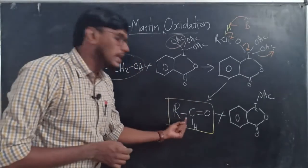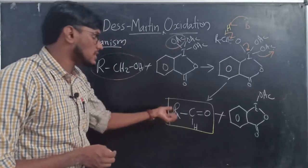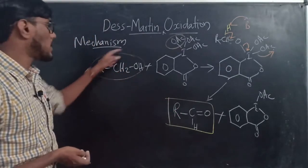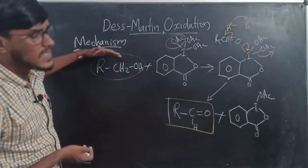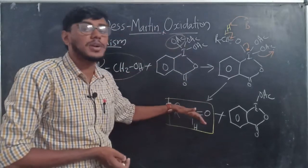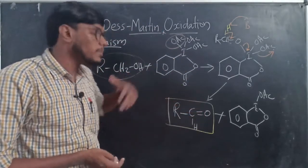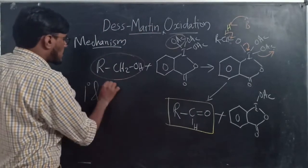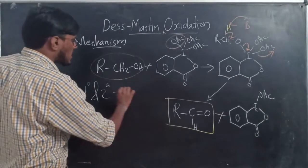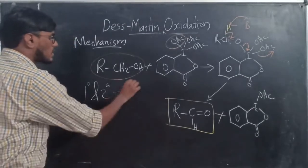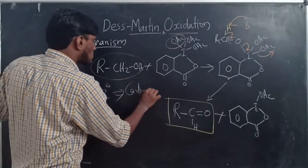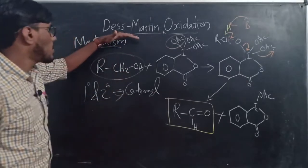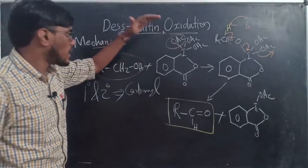The product we get is an aldehyde. From a primary alcohol you get an aldehyde as the product; if it is a secondary alcohol, you get a ketone. So by Dess-Martin oxidation, primary and secondary alcohols undergo oxidation to give carbonyl compounds.